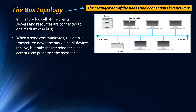In a bus topology, data sent from one workstation travels all the way down the bus — and without terminators at the ends it would keep reverberating. Every device receives the message, but only the intended recipient processes it. Devices can work out whether a message is intended for them using MAC addresses — the MAC address in the packet header identifies the correct recipient.